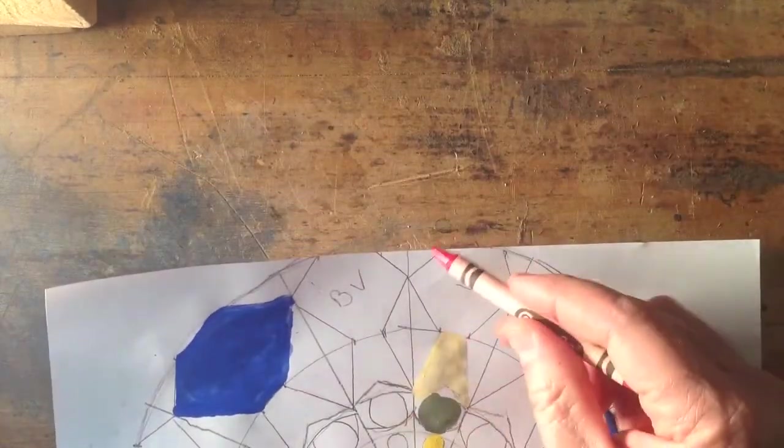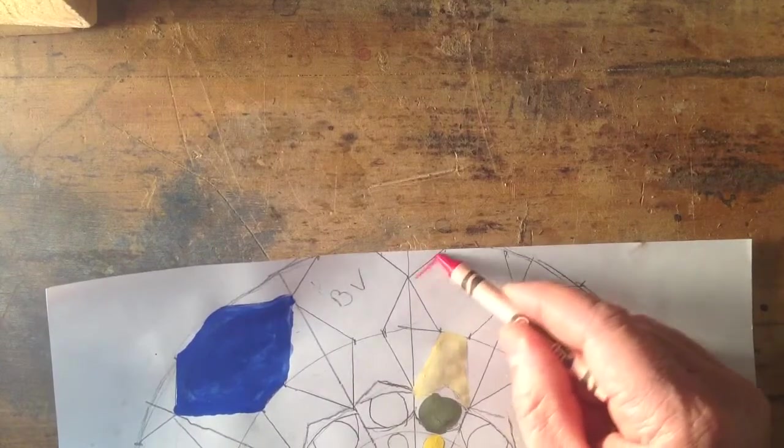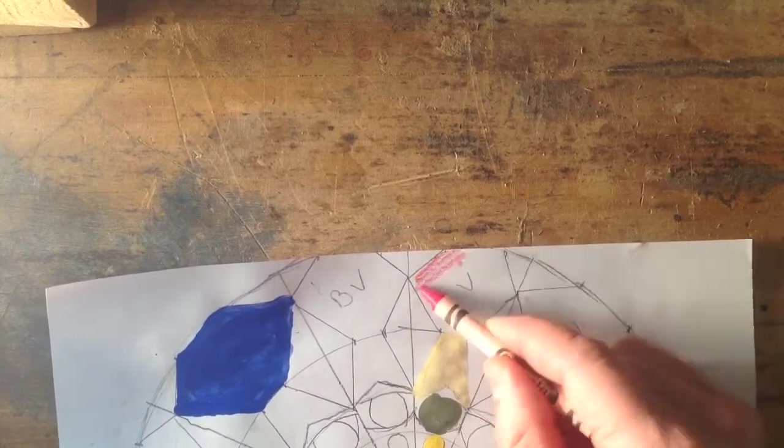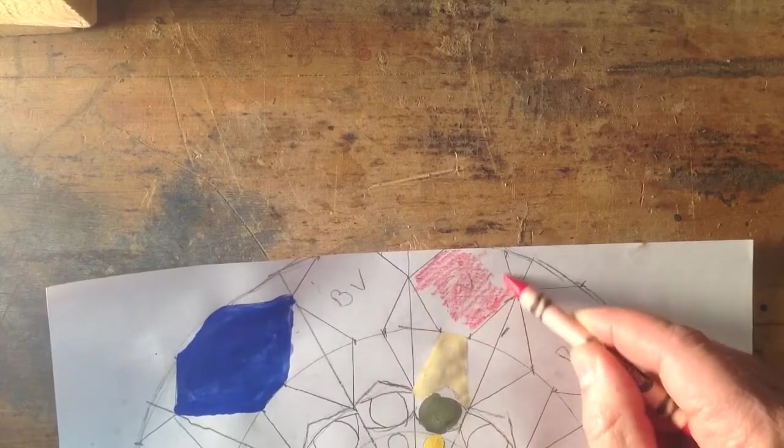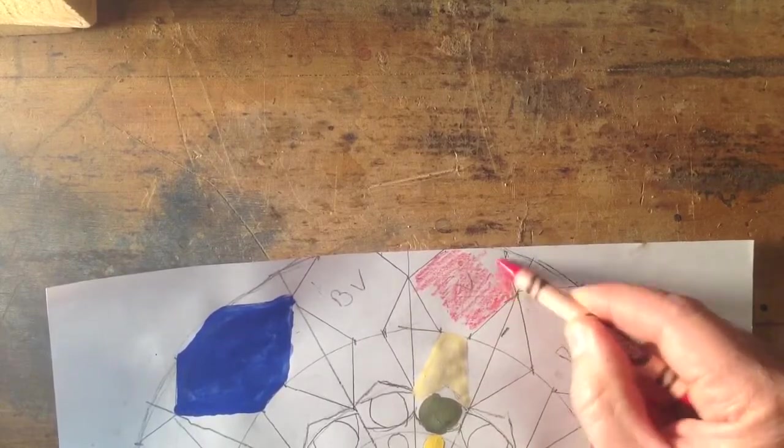So basically what I did on this with the crayon, I colored it in first with one of the colors. I'm using red right here right now. This is my complement of yellow, so I do need violet here.